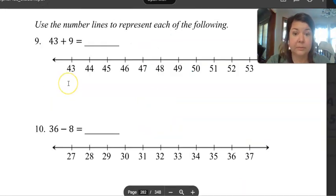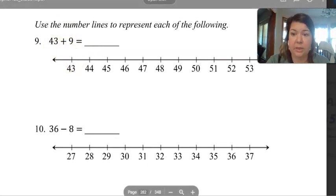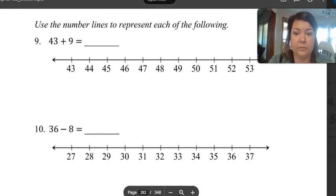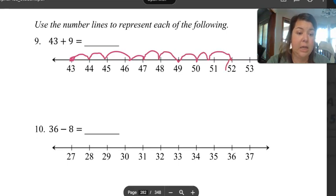Okay, last two: represent those on number lines. Make a number line from 43 to 53, and then once you add 43 plus 9 using the number line. So pause your computer and figure this out. Draw your number line and figure this out on the number line, even if you know how to do it. You need to represent it on the number line. Okay, so we start at 43, I'm gonna add 9: one, two, three, four, five, six, seven, eight, nine. So 43 plus 9 is 52.